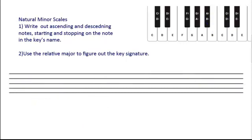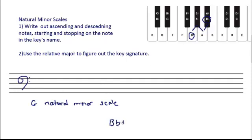Let's try one more example: the G natural minor scale. Again, we write in all the notes ascending and descending, starting and stopping on the note in the key's name — starting on G and writing up to G. To write the key signature first, we use the relative major. Starting on G, we go up three semitones and two note names to get to B-flat. B-flat major has two flats, so we write in a B-flat and an E-flat. Then it's just a matter of writing in all the notes as we go, every line and space until we get to G and then turn around and come back down. Remembering that we don't have to make any changes to natural minor scales — we just write them simply like this. This is the G natural minor scale, and this completes our video on minor key signatures and natural minor scales.